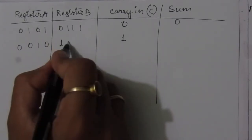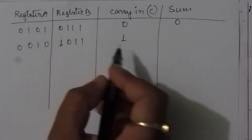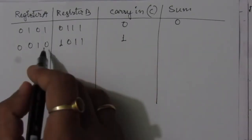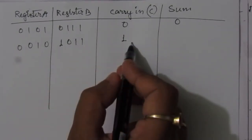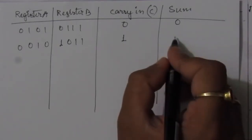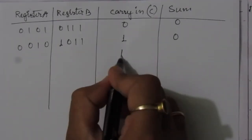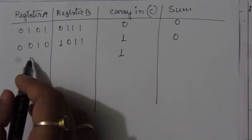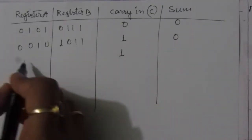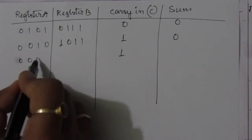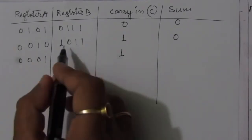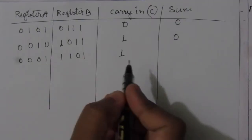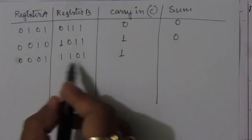For the second clock cycle: 0 + 1 + 1 gives sum = 0 and carry = 1. The content of register A is updated with this 0, giving 0001. The content of register B becomes 1101.